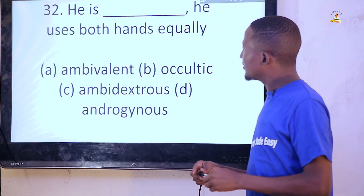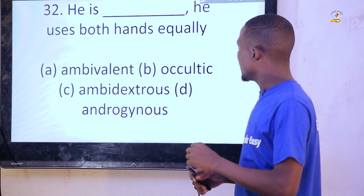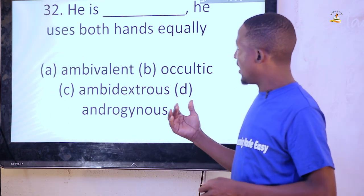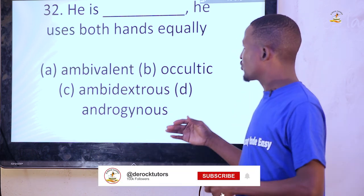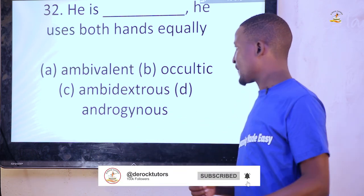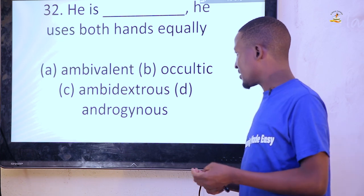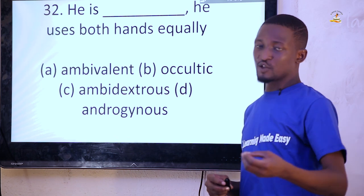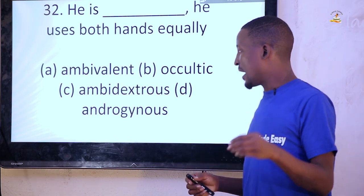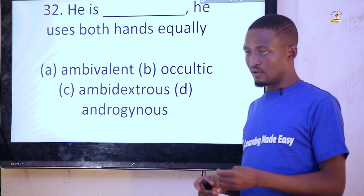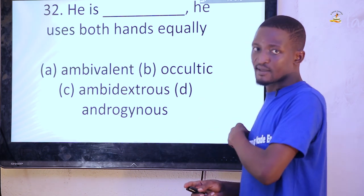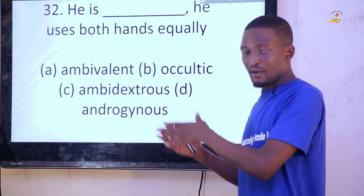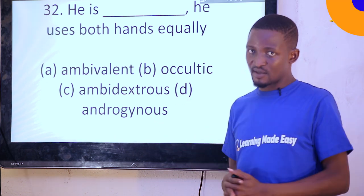'He is dash — he uses both hands equally.' This is a descriptive adjective question. The options are: ambivalent, ambidextrous, androgynous. One who uses both the right and left hands equally is ambidextrous. So: he is ambidextrous.